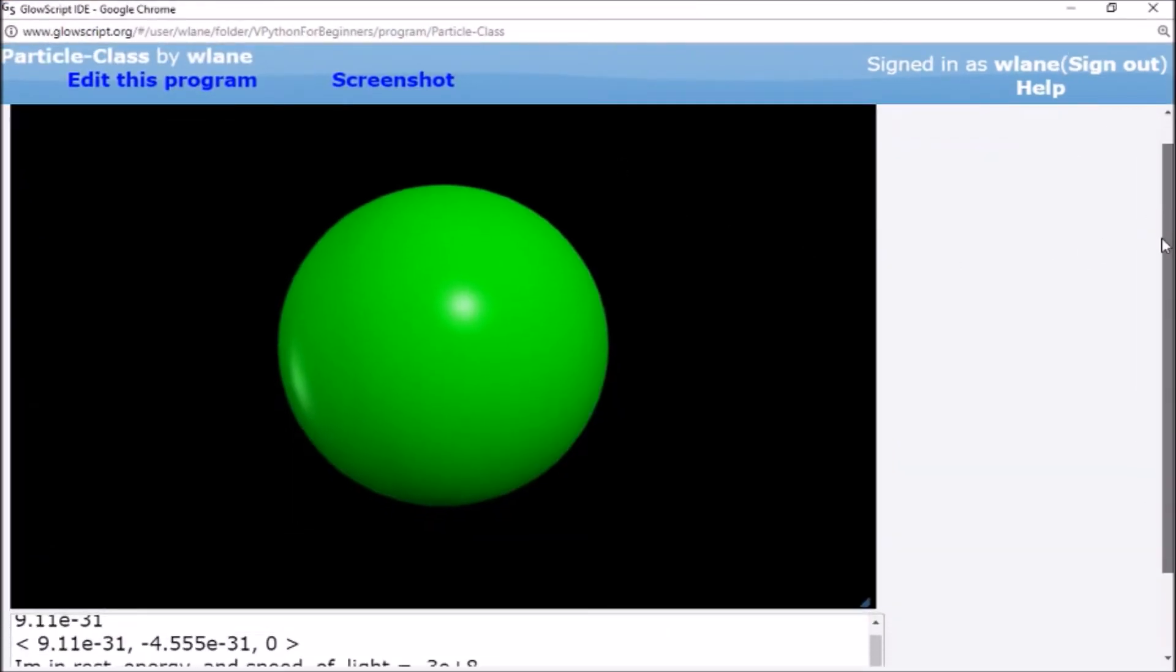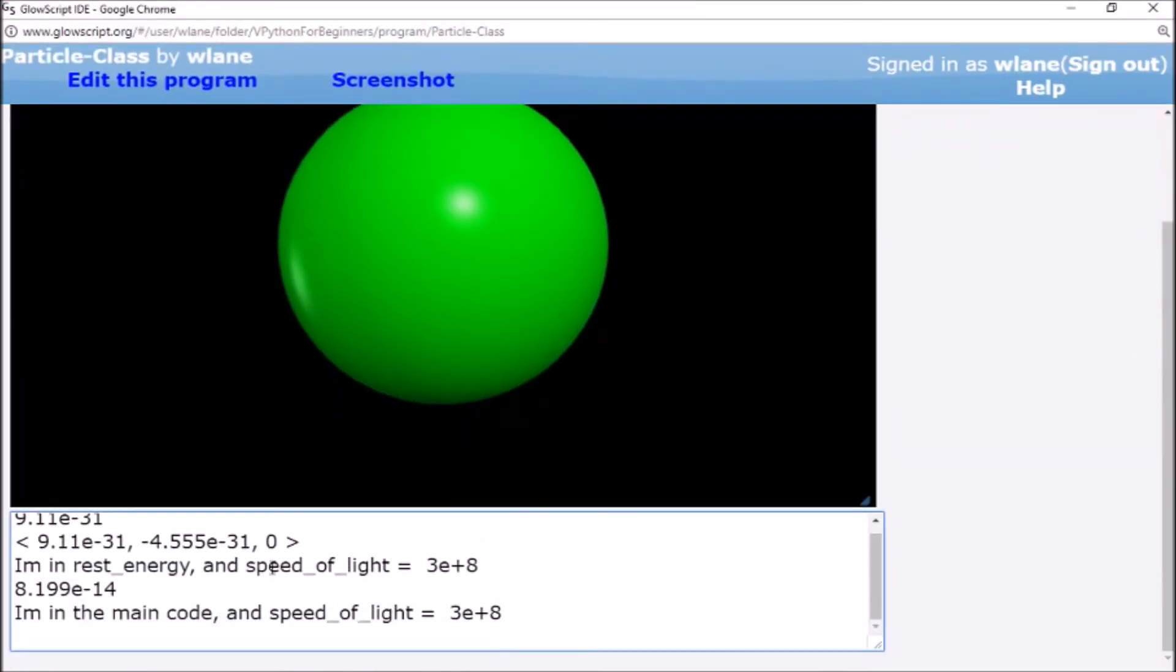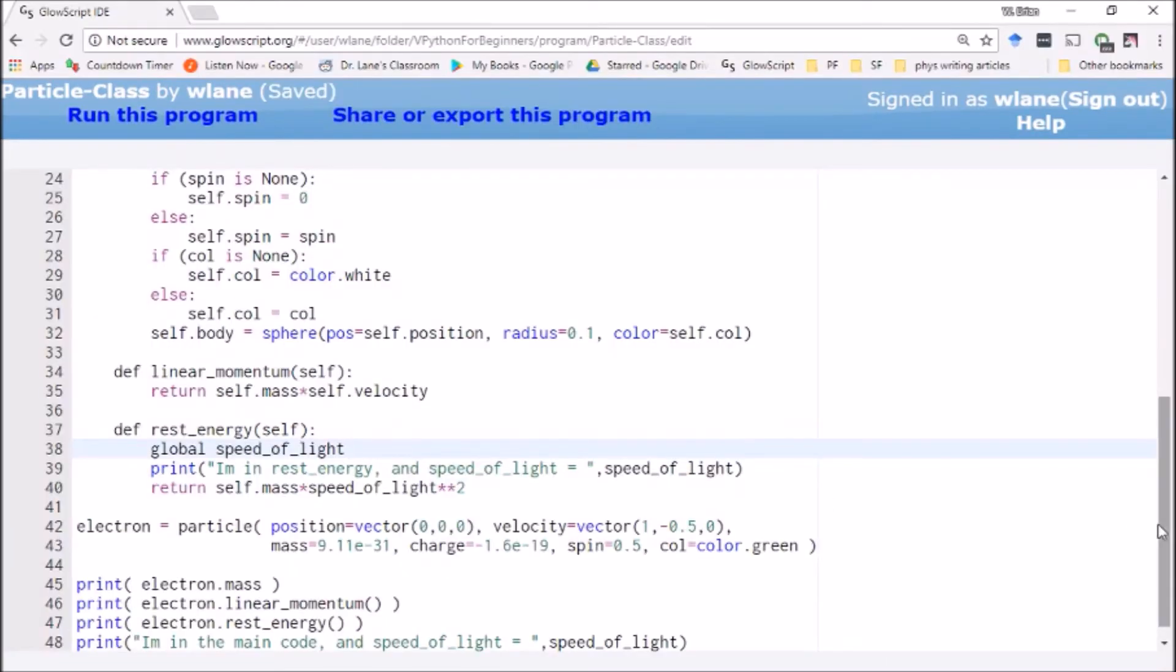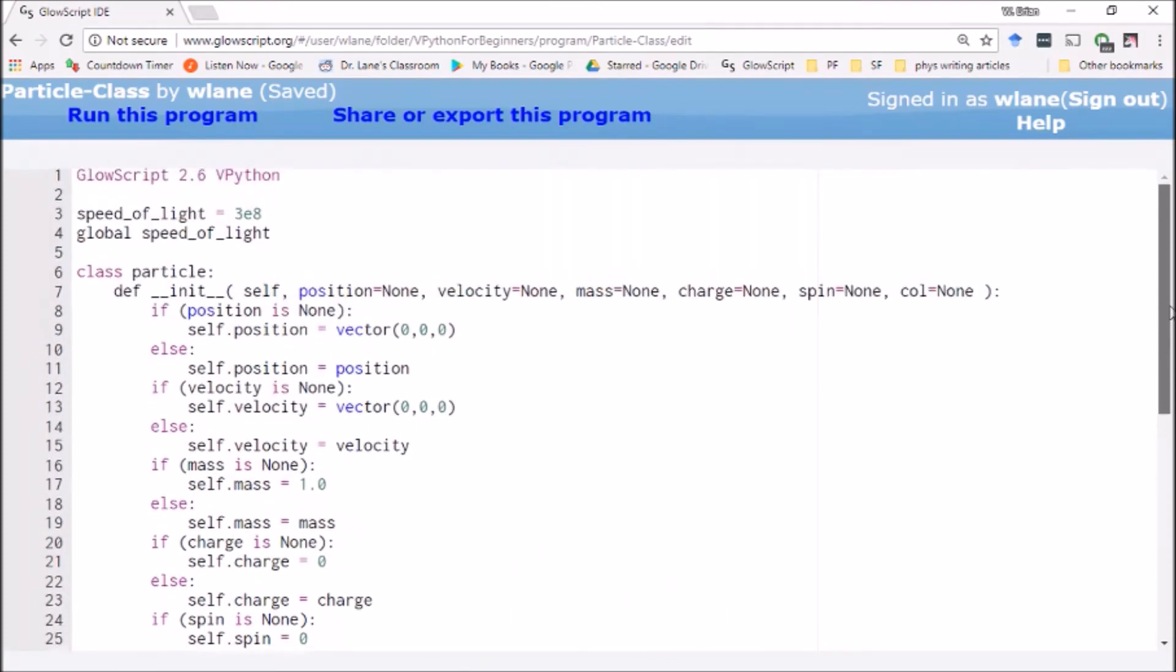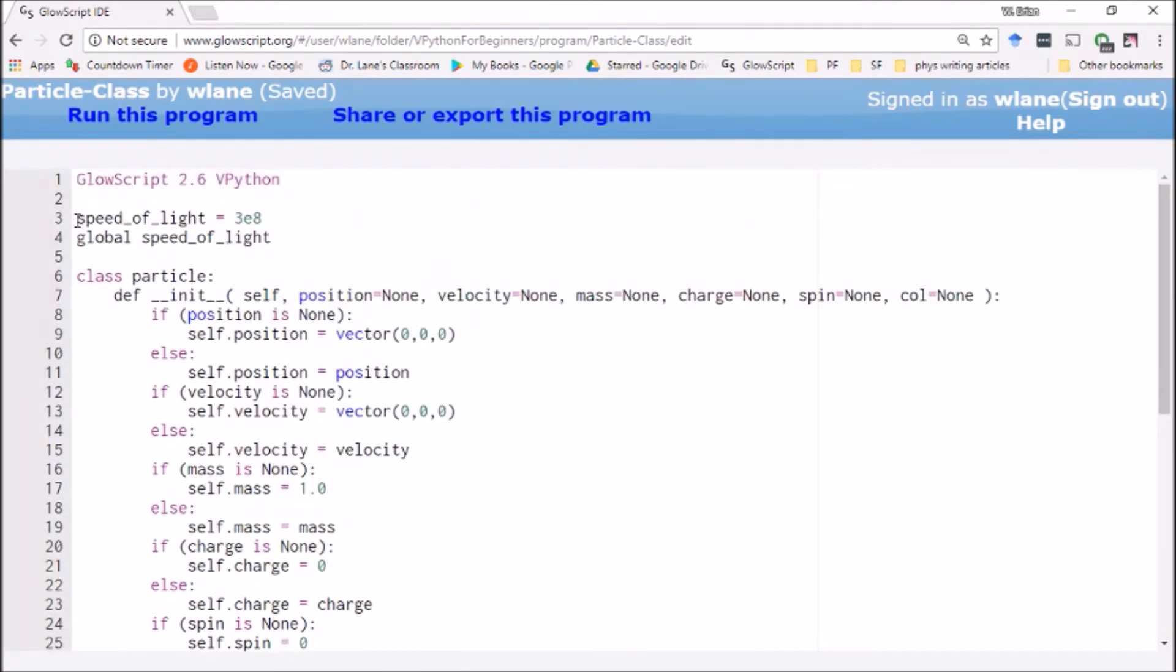And notice this time I don't get an error message. You notice it knows what speed of light is here in the function rest energy and it knows what speed of light is here in the main code. So it's generally a good idea if there's a variable or a value that you want to be able to reference repeatedly, that you want to be able to reference in the main code and then inside a class and then inside of a function, you want to go ahead and declare that as a global variable. Add it to your list of global variables.